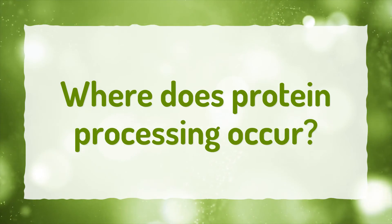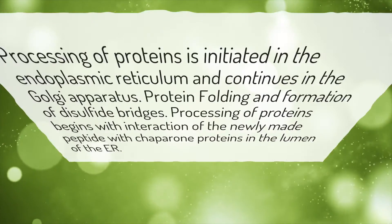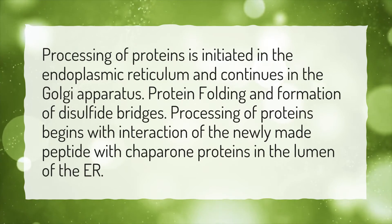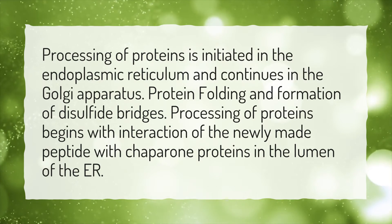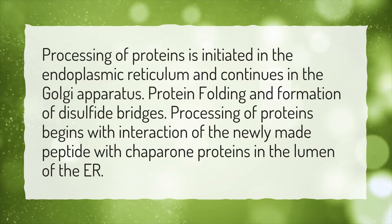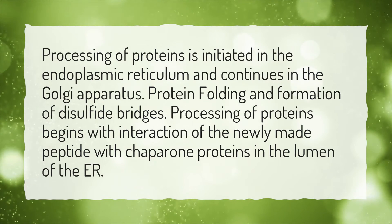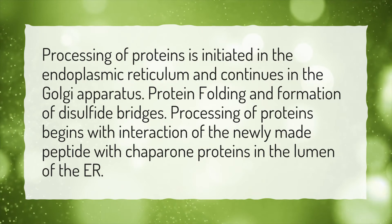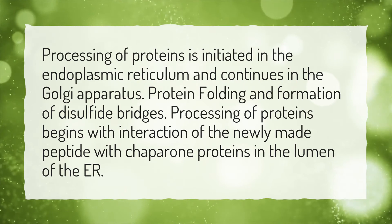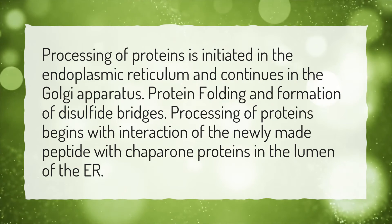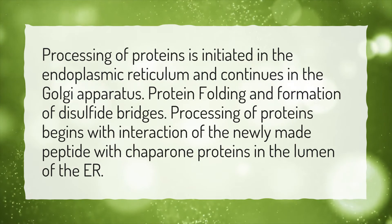Where does protein processing occur? Processing of proteins is initiated in the endoplasmic reticulum and continues in the Golgi apparatus, involving protein folding and formation of disulfide bridges. Processing begins with interaction of the newly made peptide with chaperone proteins in the lumen of the ER.